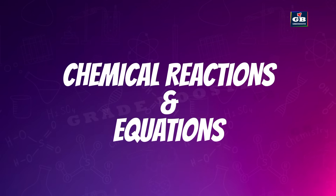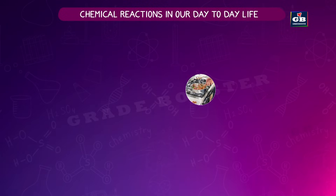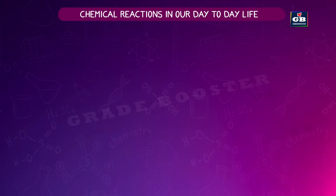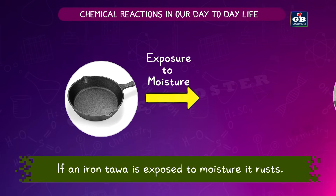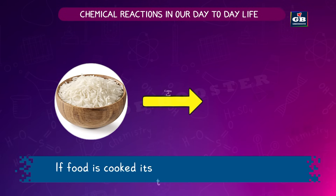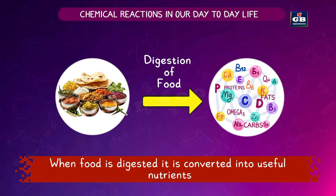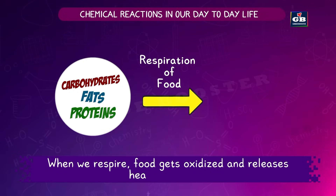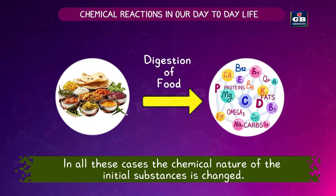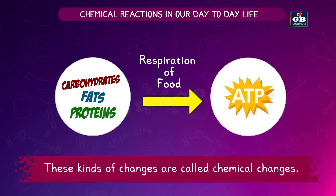In our day-to-day life we see different chemical changes around us. If milk is left at room temperature during summer it becomes sour. If an iron tawa is exposed to moisture it rusts. If grapes are fermented they smell like alcohol. If food is cooked its texture and taste changes. These kinds of changes are called chemical changes.